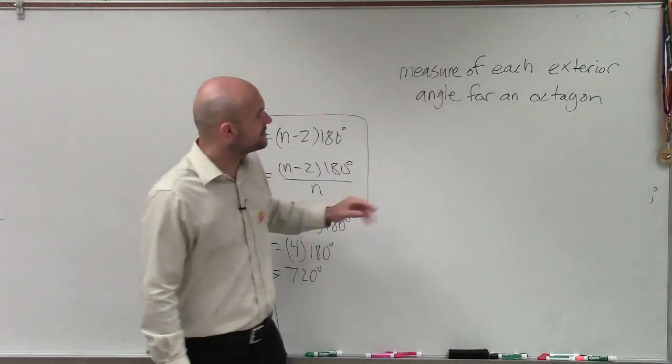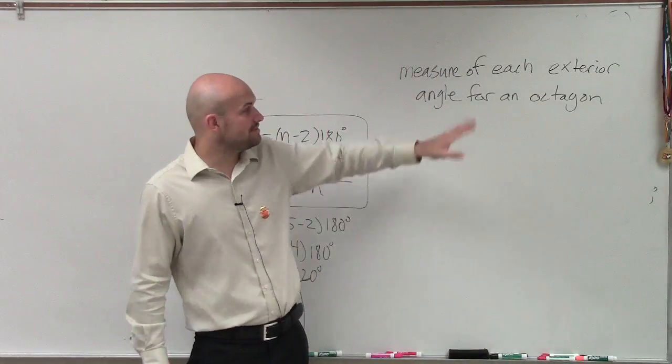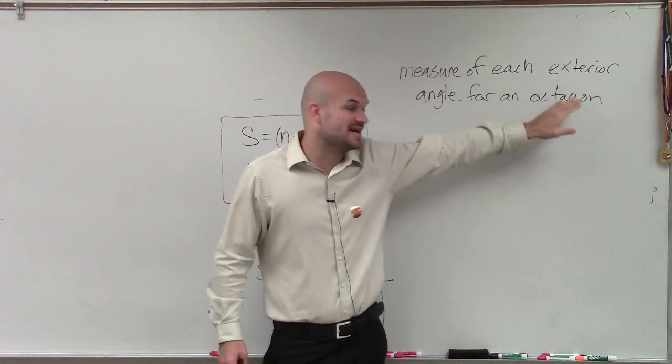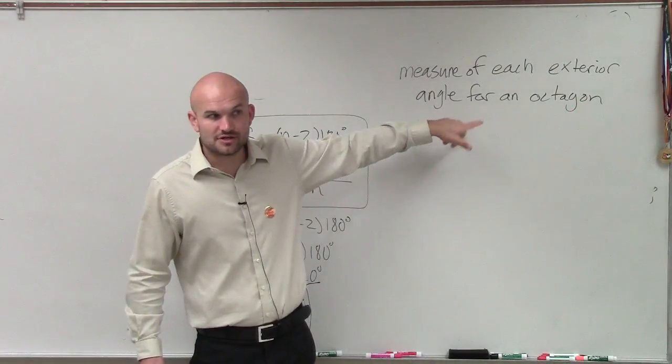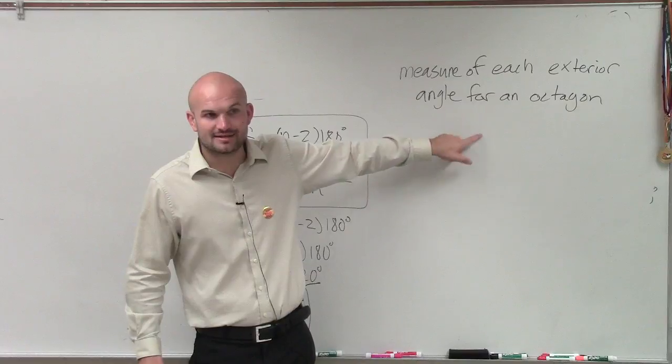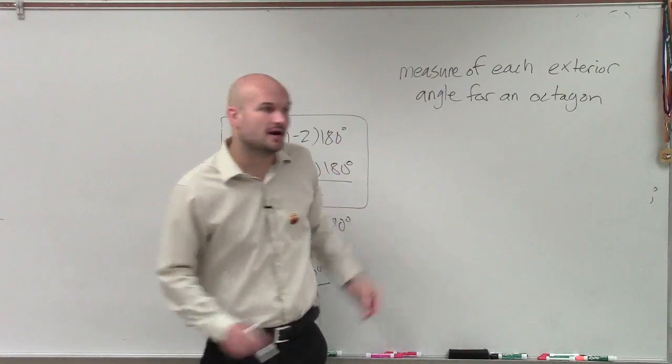So here, ladies and gentlemen, what they're asking us is they want to find the measure of one exterior angle. But do we know what the measure of all the sum of the exterior angles are for an octagon? What is the measure of sum of all the angles in an octagon? Well, that's the number of sides, 360, right?